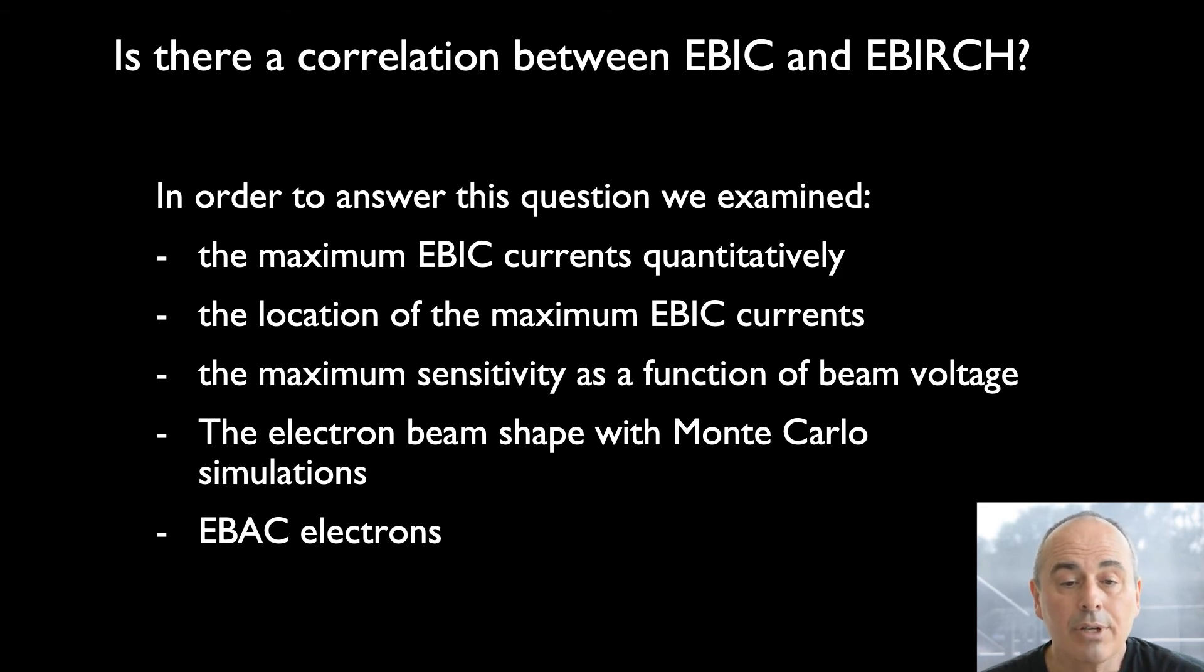The maximum EBIC currents quantitatively and the location of the maximum EBIC currents. The maximum sensitivity as a function of beam voltage. This is necessary as we have seen that the maximum change of the EBIC image occurs at beam voltages between 150 V and 200 V, whereas the EBIRCH spot is best visible at a beam voltage of 500 V. Finally, we examined the electron beam shape with Monte Carlo simulations to provide an explanation for the differences in beam voltage, and we studied the contribution of EBIC electrons to image generation.